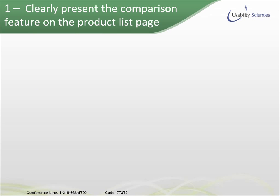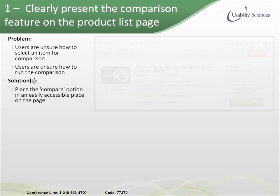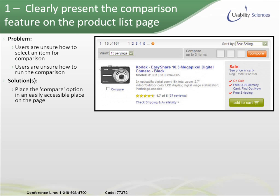Number one: clearly present the comparison feature on the product list page. Often, users are unsure how to select an item to compare. Once they've selected the item, they might be unsure how to actually run the comparison. So an easy solution would be to place the compare option in an easily accessible place on the page.